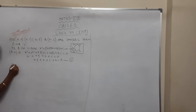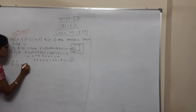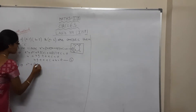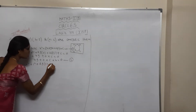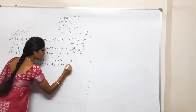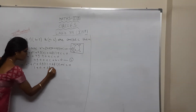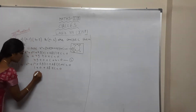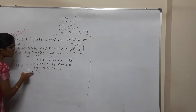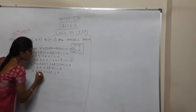Take the second point (0,1). It also passes through. So 0² + 1² + 2G(0) + 2F(1) + C = 0, giving 1 + 2F + C = 0. Written in order: 2F + C + 1 = 0. Consider this as Equation 3.